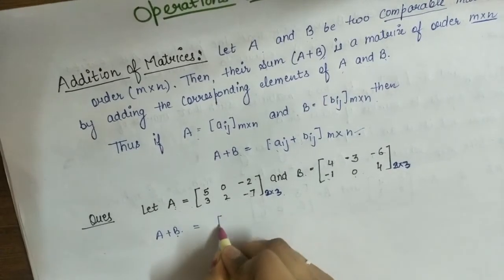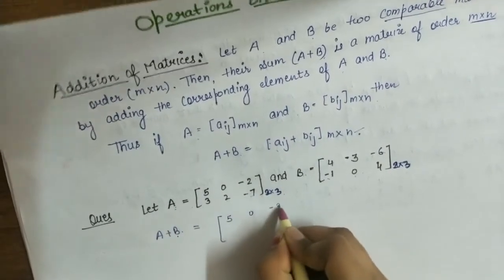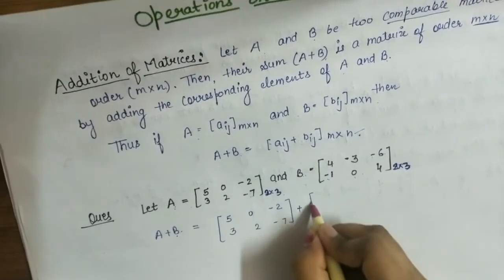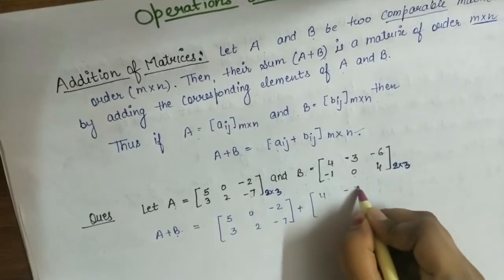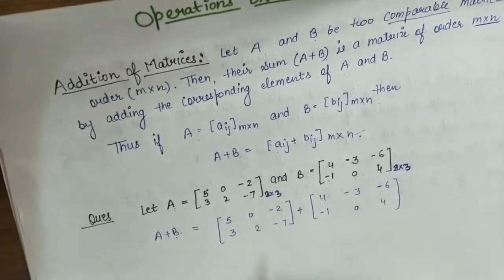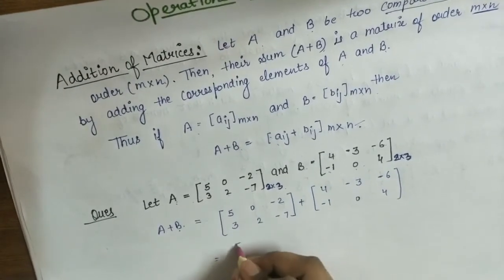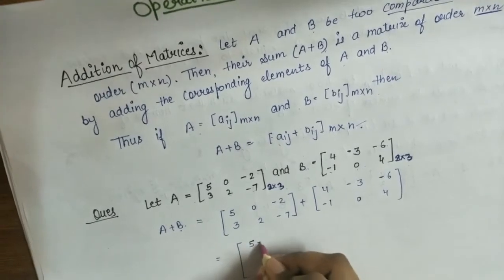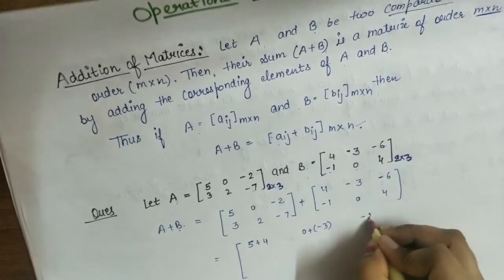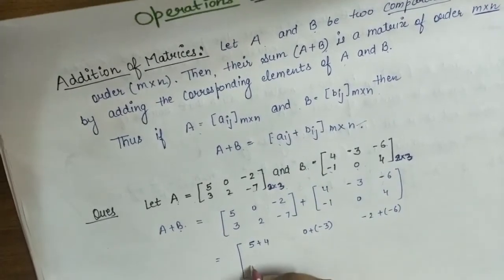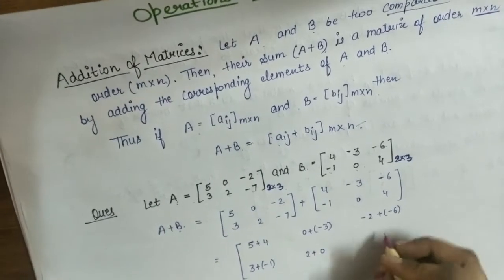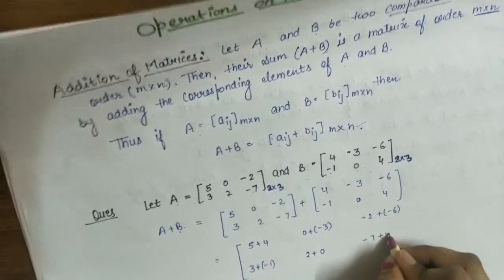So A+B equals the matrix [5, 0, -2; 3, 2, -7] plus [4, -3, -6; -1, 0, 4]. We simply add the corresponding elements: 5+4, 0+(-3), -2+(-6), 3+(-1), 2+0, and -7+4.